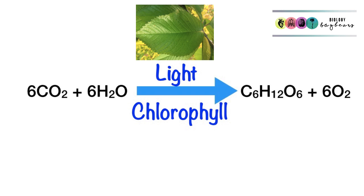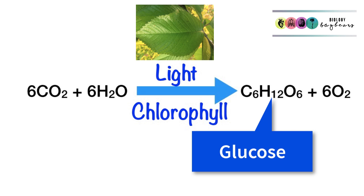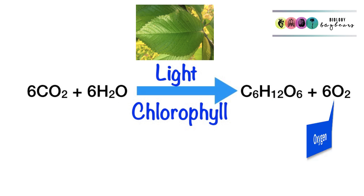Light gets trapped by chlorophyll in the chloroplast of those plant cells. At the end of the process, glucose is produced and so too is oxygen.